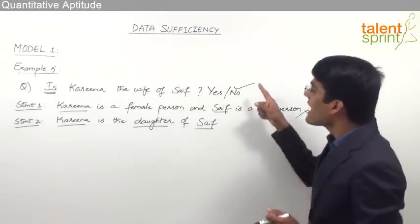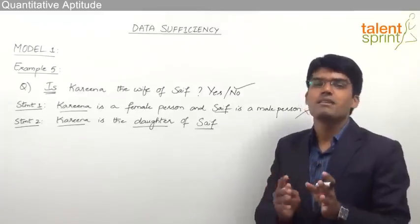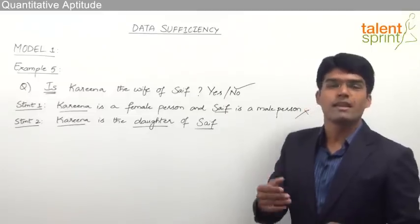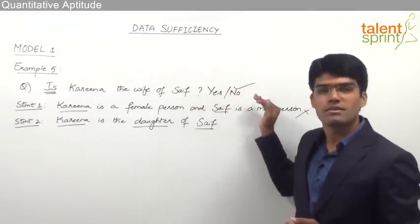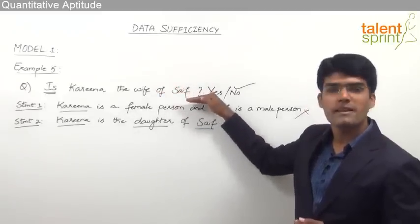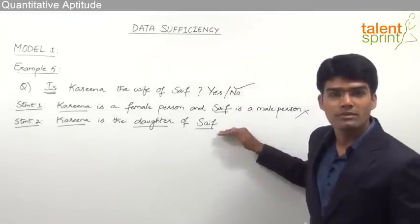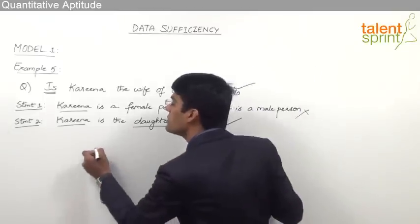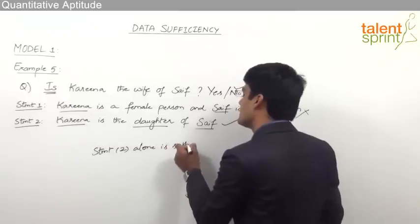The point to be understood here is: because the answer for the given question is 'no' doesn't mean that the question cannot be answered. This is where students go wrong — they mark the answer as option 4, thinking both statements together cannot give the answer. Remember, we are able to get the answer for this question; the answer may be no or yes, that's a different story. We are able to say that 'Kareena is the wife of Saif' is a wrong statement, so the answer is no, and that we are able to say from statement 2 alone. Therefore, statement 2 alone is sufficient, and the answer has to be option 2.